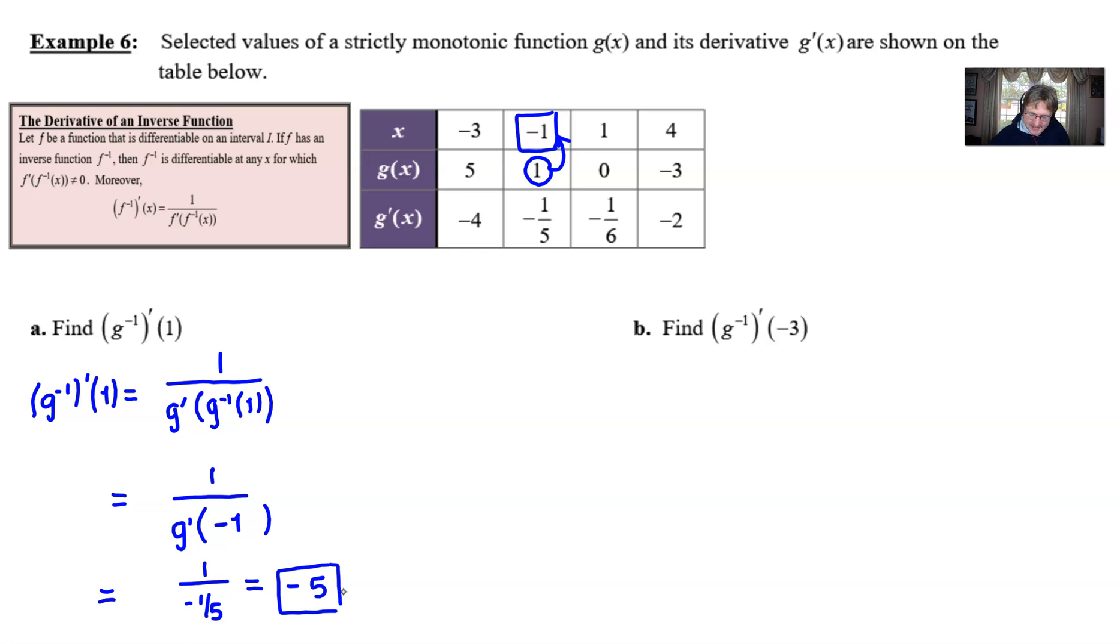All right, let's see what we got here. For g inverse prime of negative three, well, we're going to go ahead and set the stage by just basically writing out what we're supposed to do. We know that that's equivalent to 1 over g'(g⁻¹(-3)). Then we go after the g inverse of negative three. That seems to be our main goal initially.